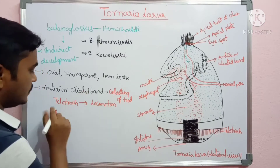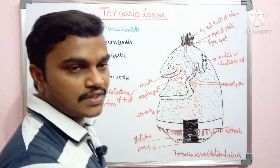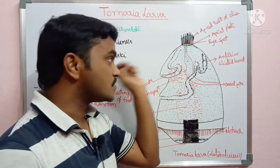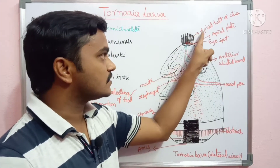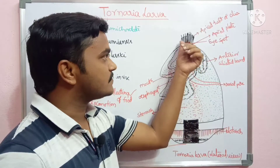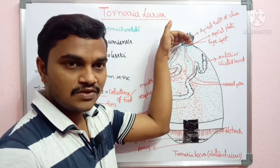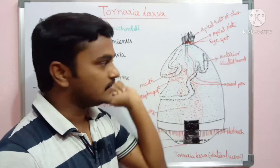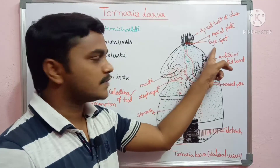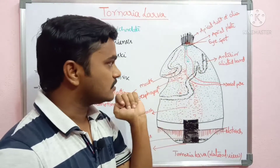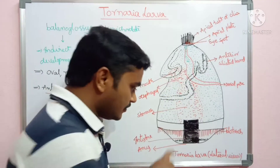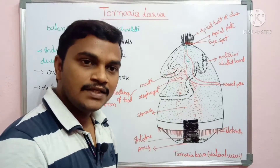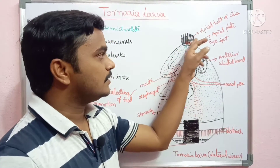So the anterior ciliated band is used for food collection. At the anterior region, there is a tuft of cilia called the apical tuft. There is also an apical plate present in the anterior region. In this region, there is also a pair of eye spots present.